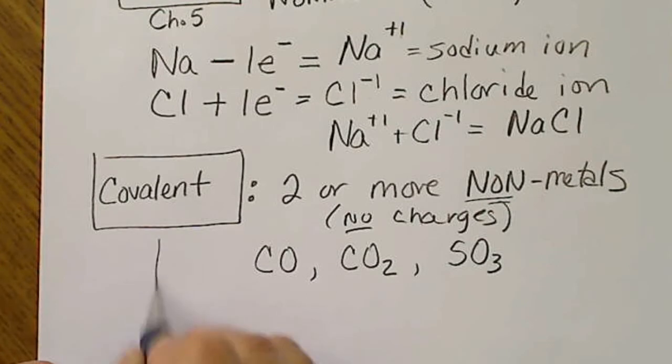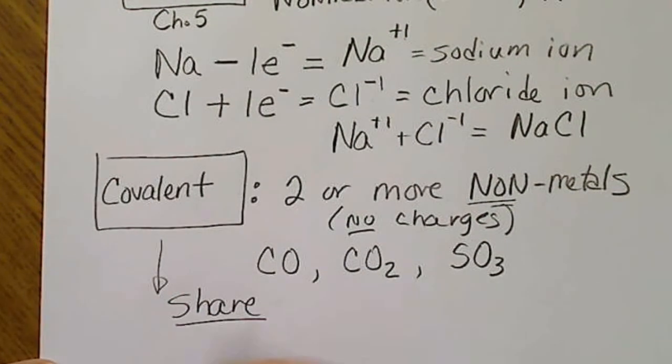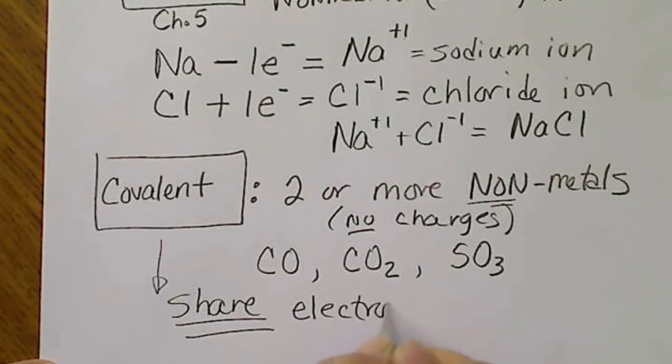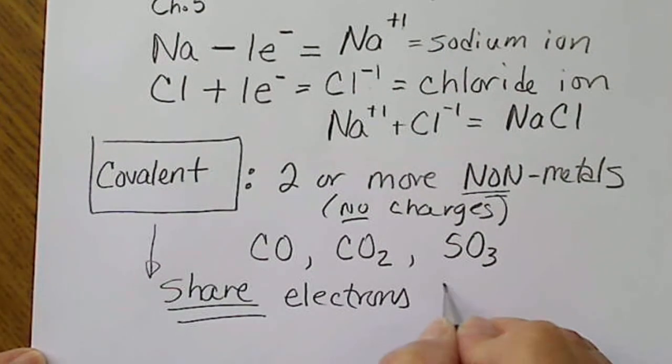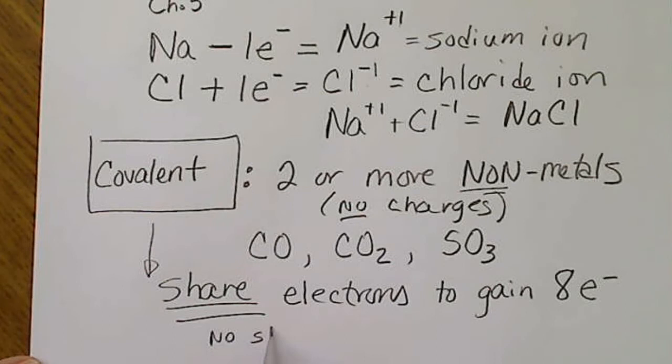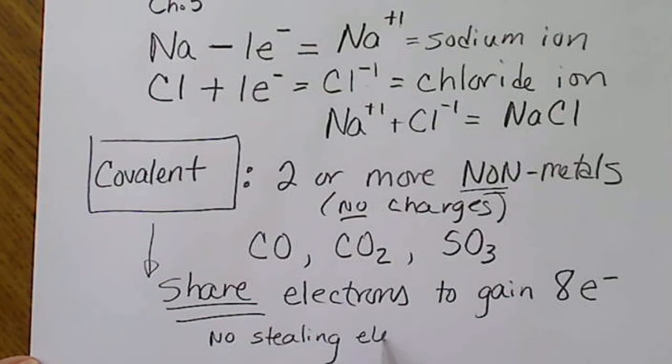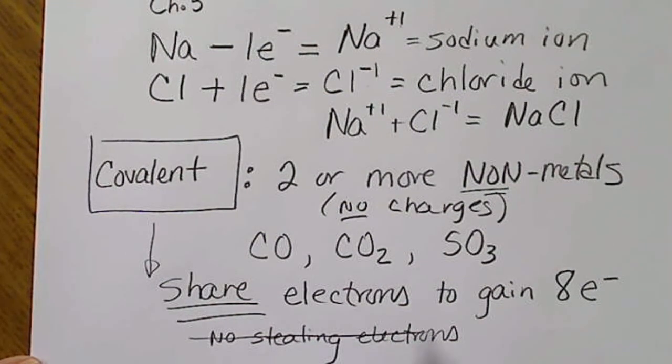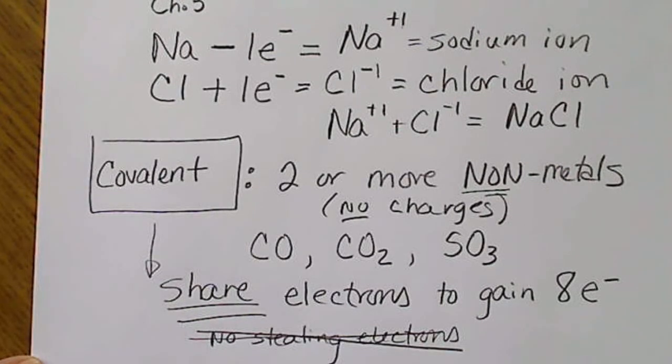And these type of atoms share electrons to gain the magic number eight electrons around them. So there is no stealing of electrons going on. There's no loss or gain of electrons. That type of compound is ionic. So we won't be talking about that until we get to chapter five.